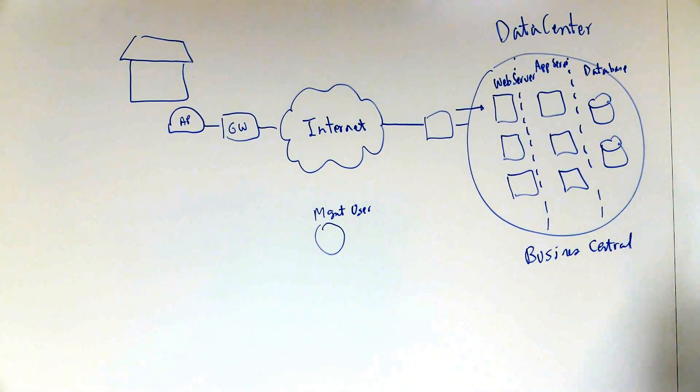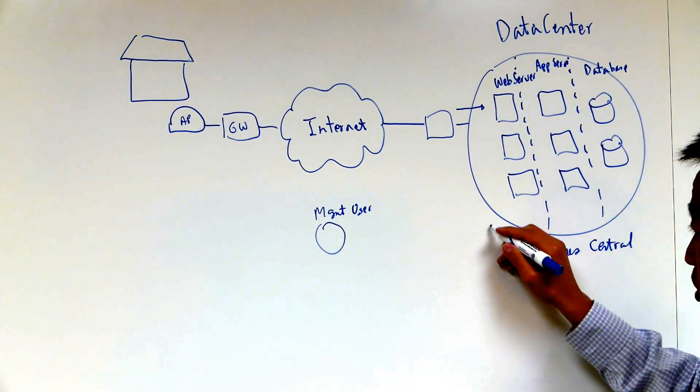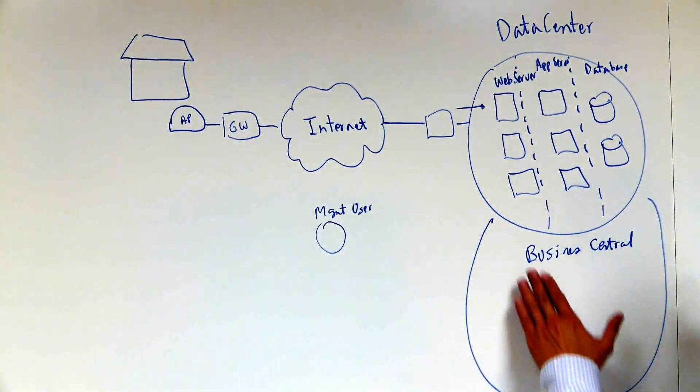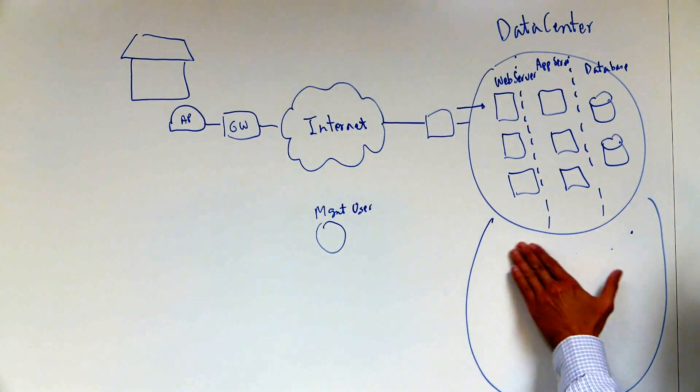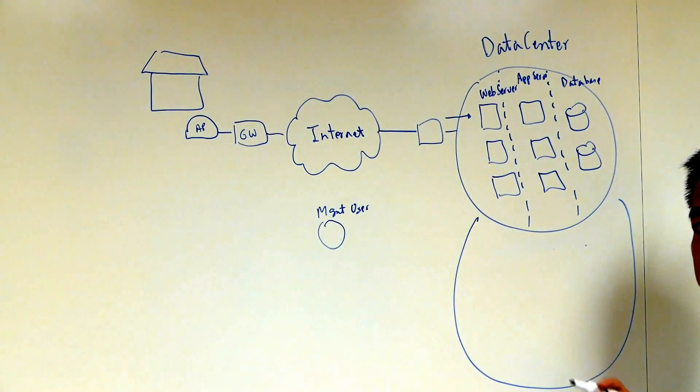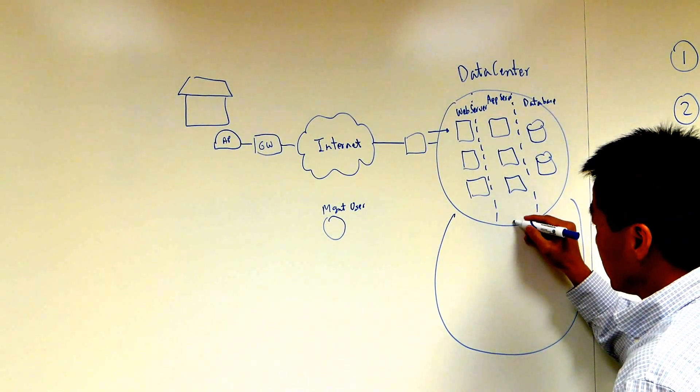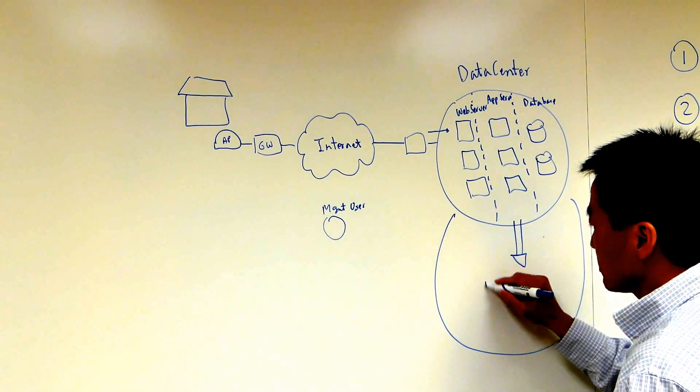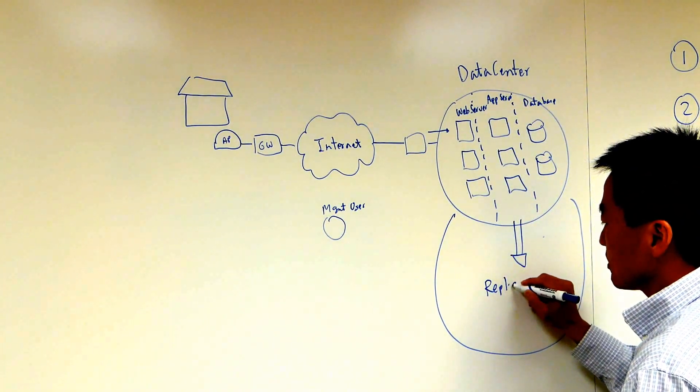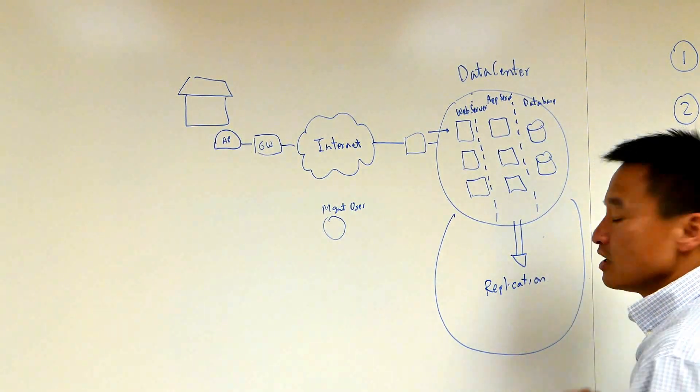And for redundancy, we host the content in multiple data centers of Amazon. So you have multiple locations, fully redundant. In the case that one data center goes down, automatically the other data center will replicate the content.